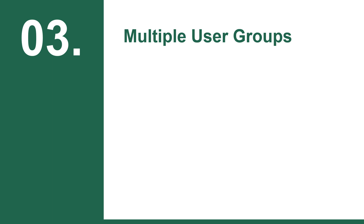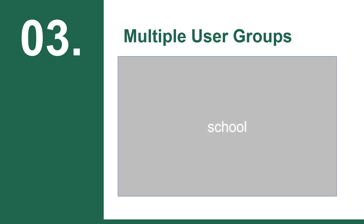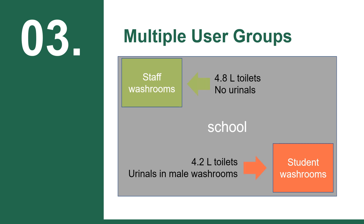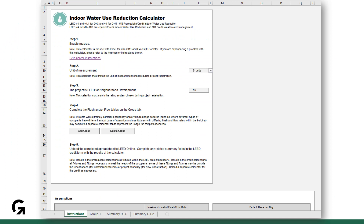Issue three: we often see projects with multiple occupancy types with different access to fixtures. Here we have a typical school with staff using one set of washrooms and students another. The staff have 4.8 liter toilets with no urinals, while students have 4.2 liter toilets and also have urinals. To resolve this, go to the instruction tab and add another group. This allows separate calculation tabs for each user group — staff separately from students.